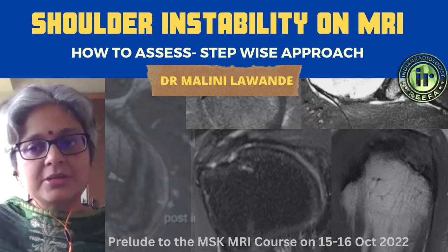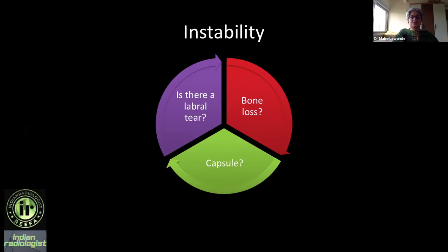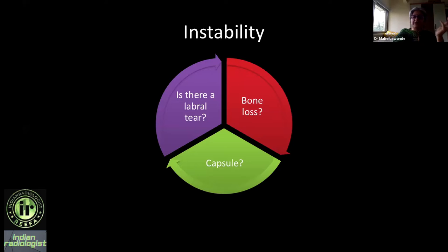That brings us to the next question. It's not rotator cuff, it's not an older patient. A younger patient has come with recurrent dislocation or maybe pain, and the surgeon is suspecting instability. The three questions you want to answer are: is there a labral tear, is there bone loss, and what's happening to the capsule?